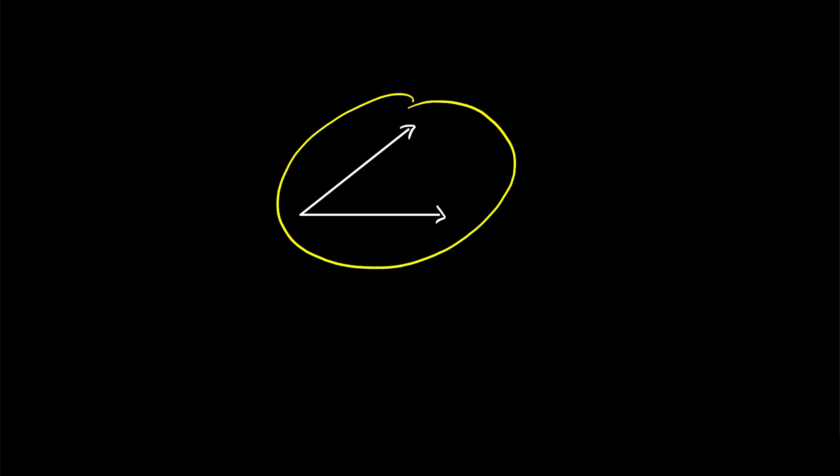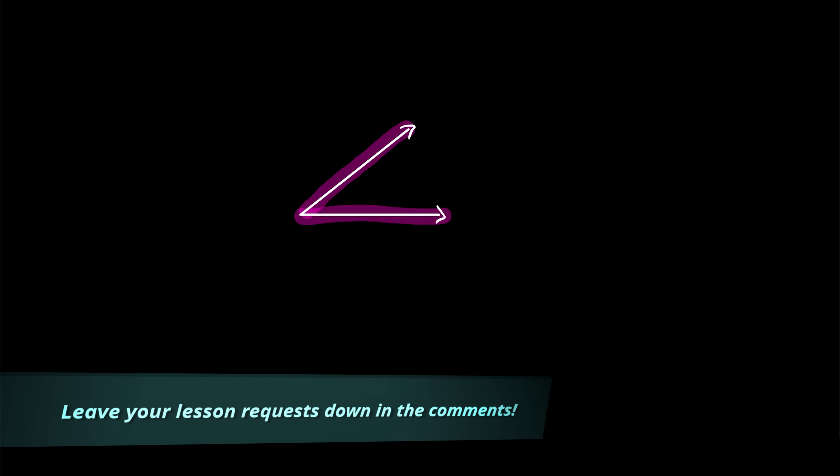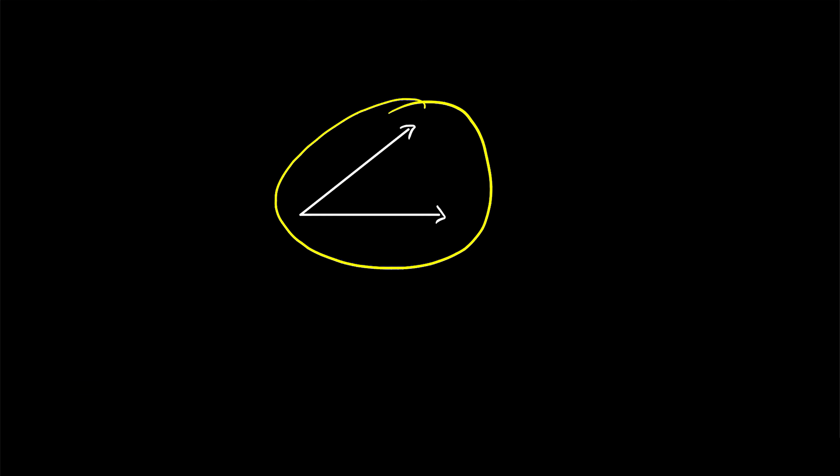Here we've got an angle. Remember that an angle is formed by two rays that share a common vertex. Suppose we want to come up with a name for this angle, something to call it. We'll go over how to name angles in today's Wrath of Math lesson.